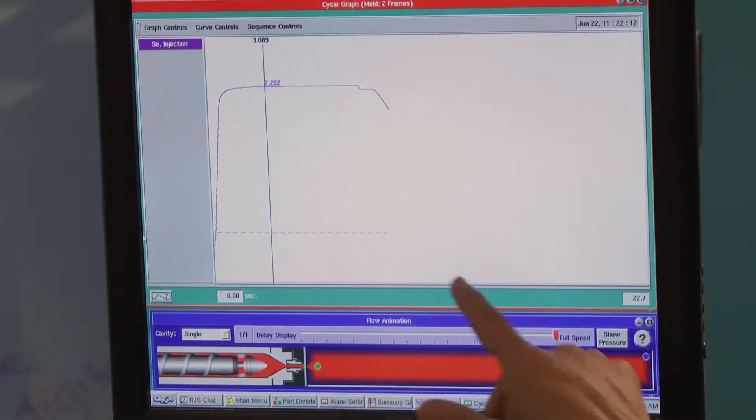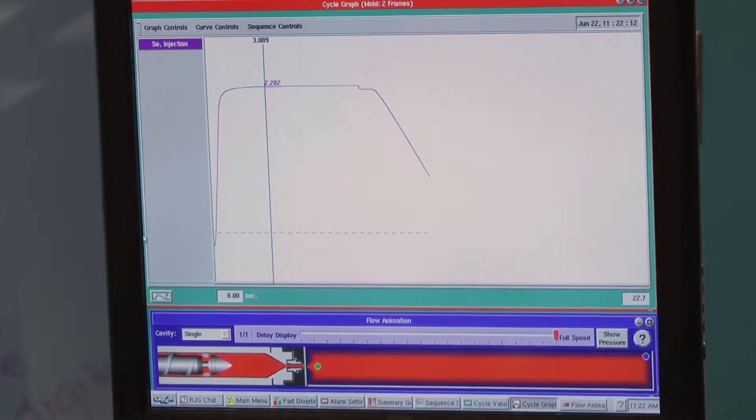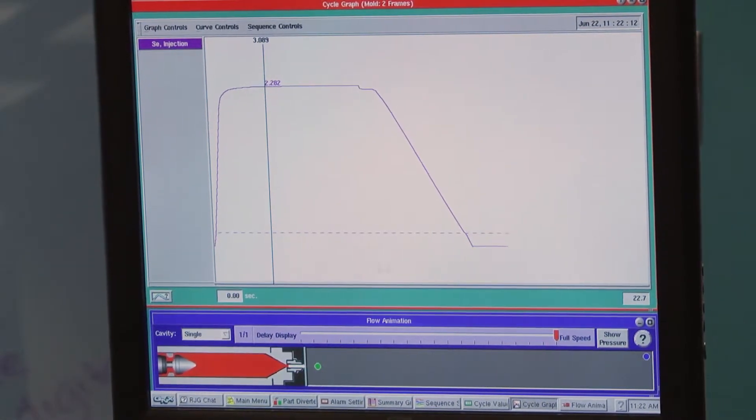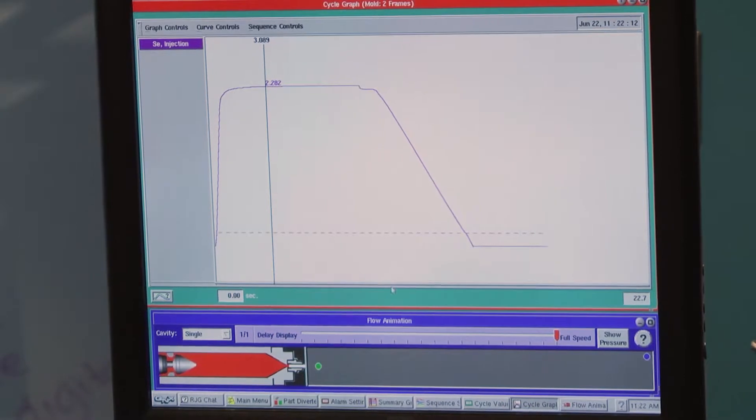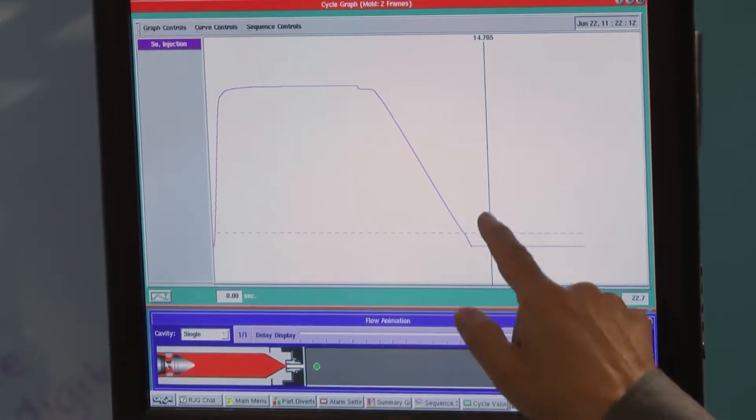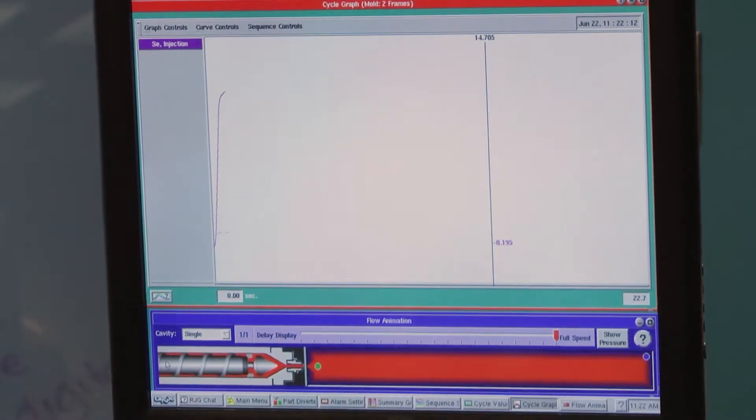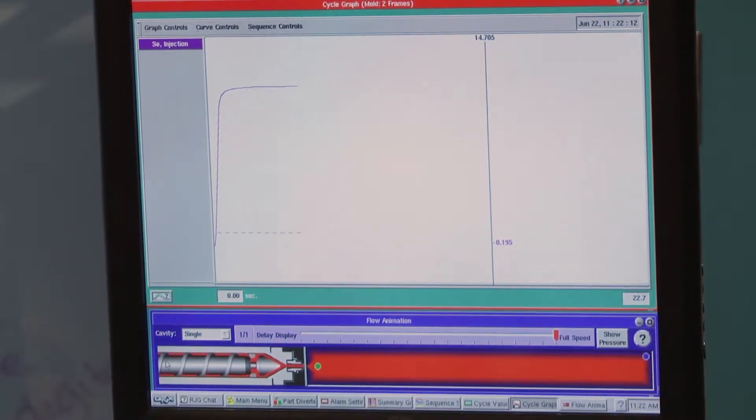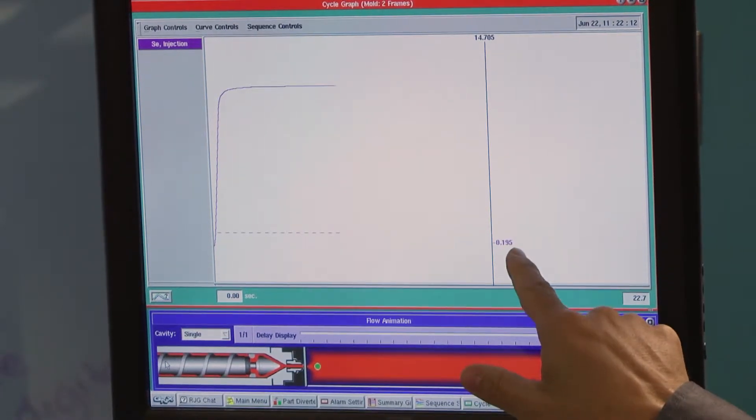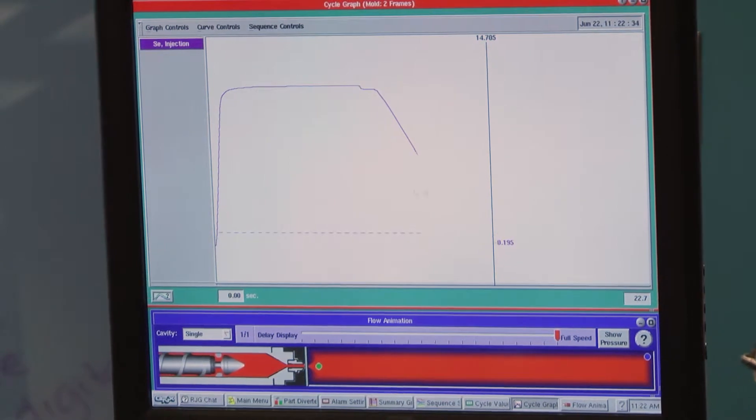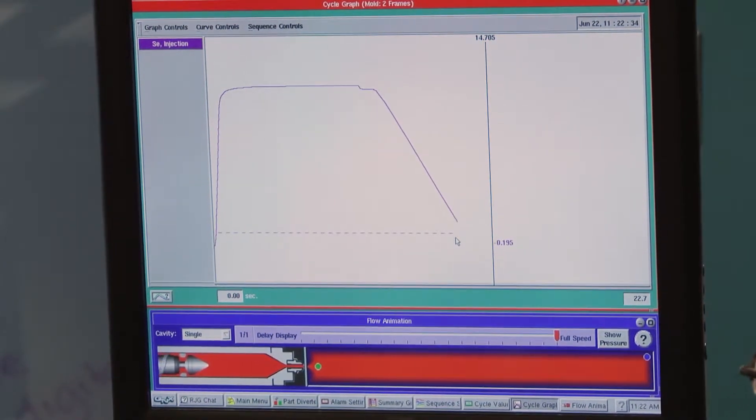The other thing you'll notice on here, with this being the zero position, is that the screw comes back to a point below zero. And that's actually showing decompression. As at the end of screw recovery, we build the shot, the screw pulls back just a little bit, and we're able to see on the curve what the decompression setting is.